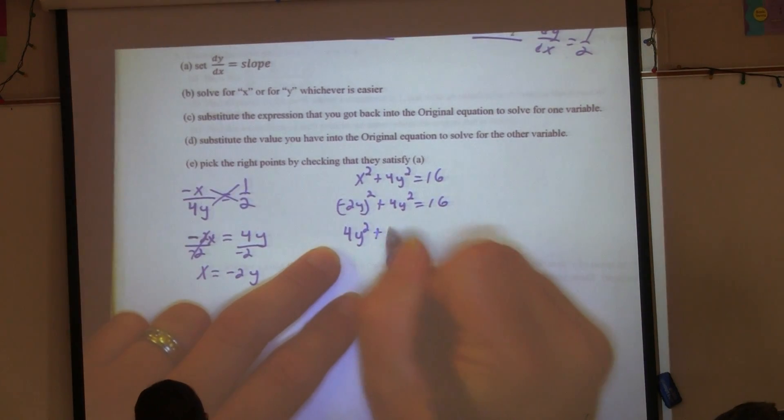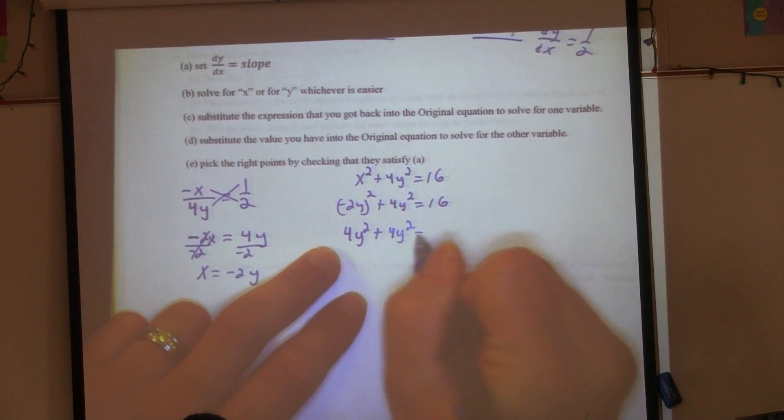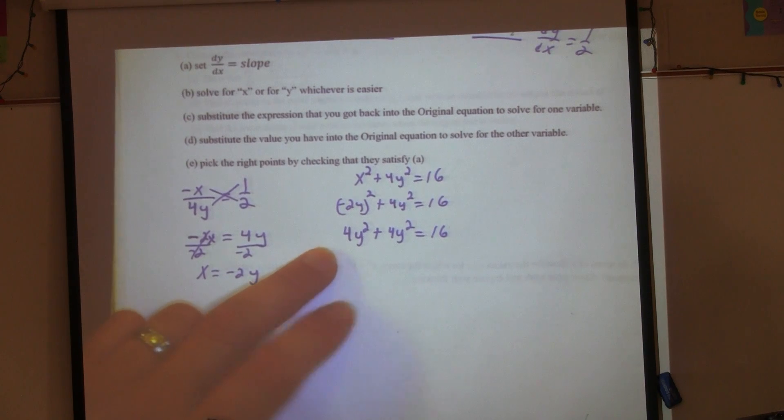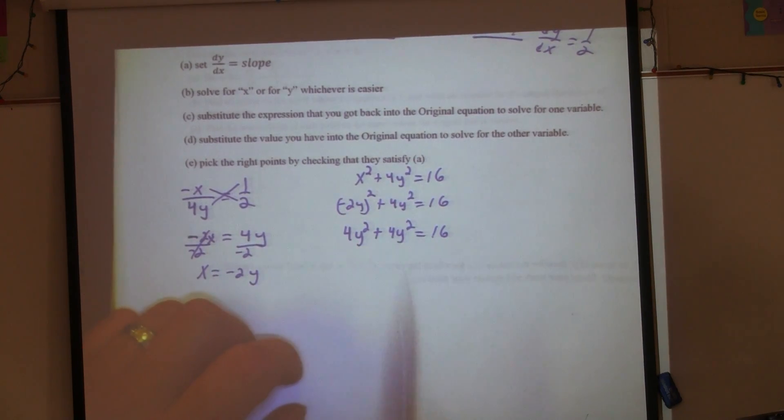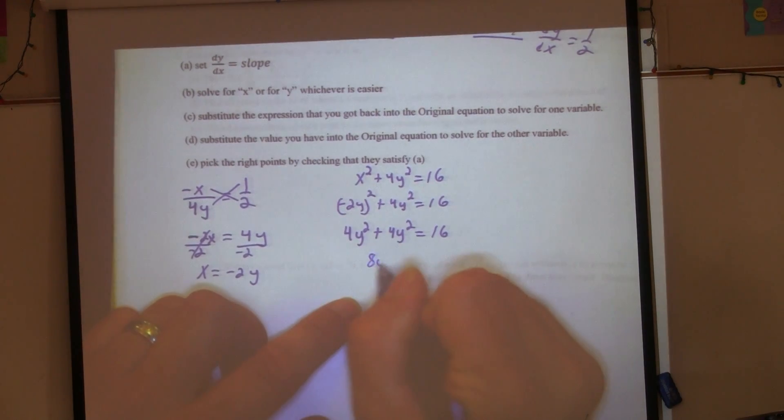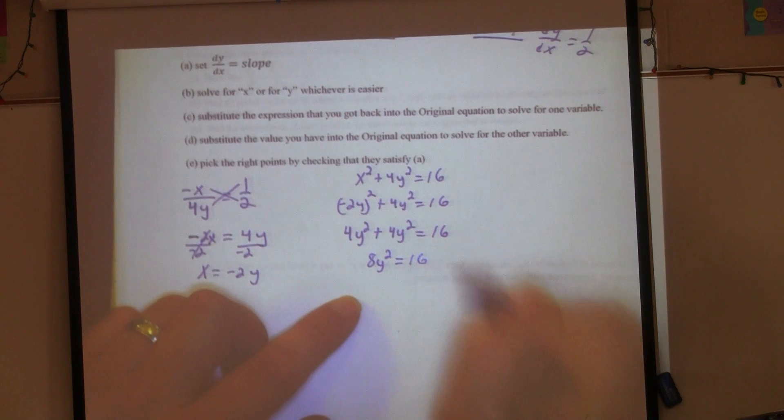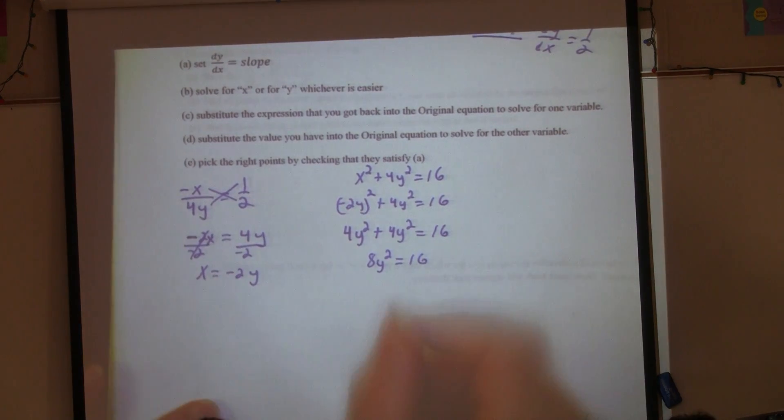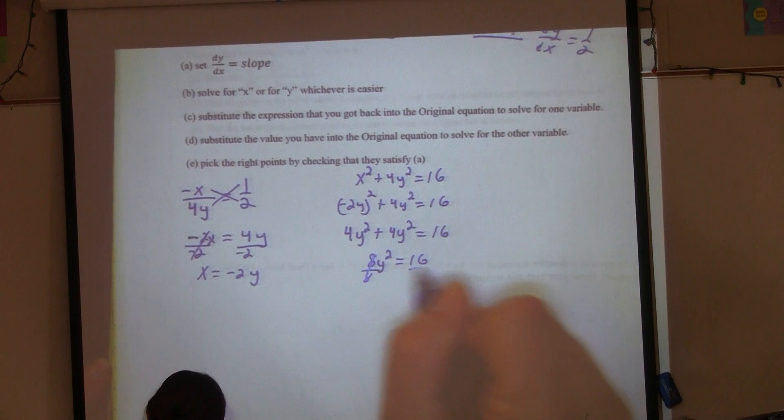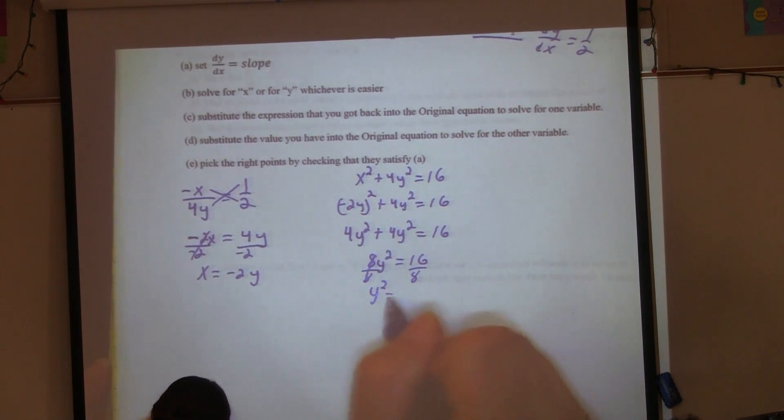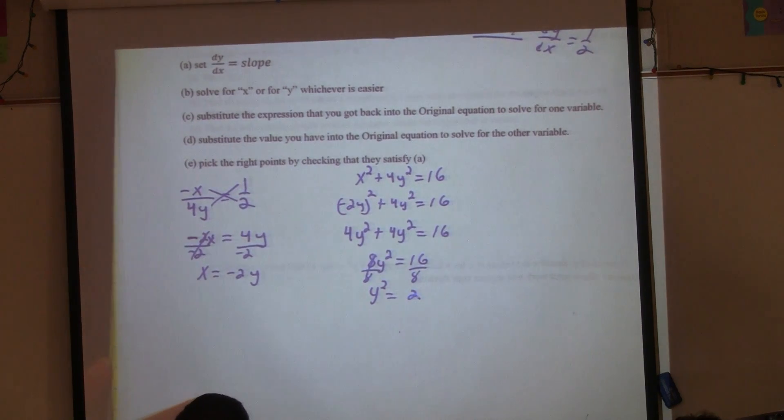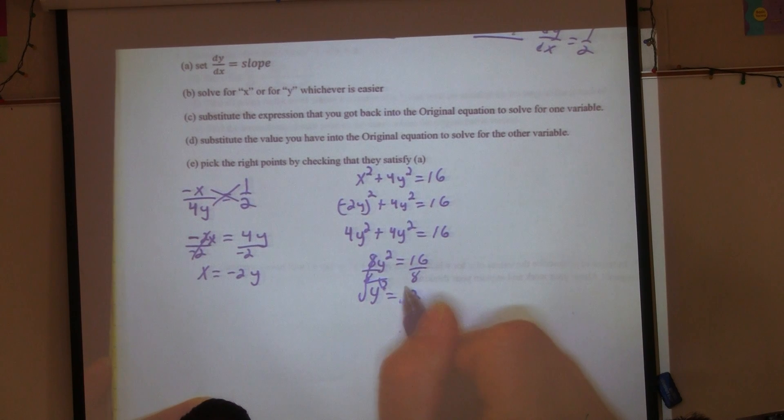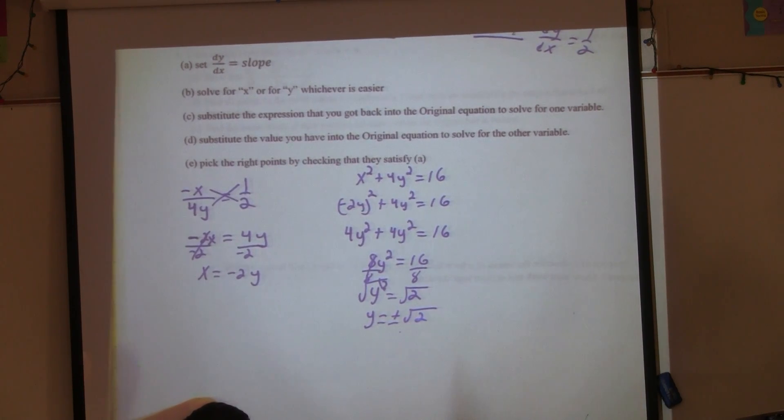Positive. 4Y² + 4Y² = 16. So what's 1 cookie plus 1 cookie? 2 cookies. This is 4 cookies plus 4 cookies, so we get 8 cookies. Divide by 8. Y² = 2. And take the square root. Y = ±√2.